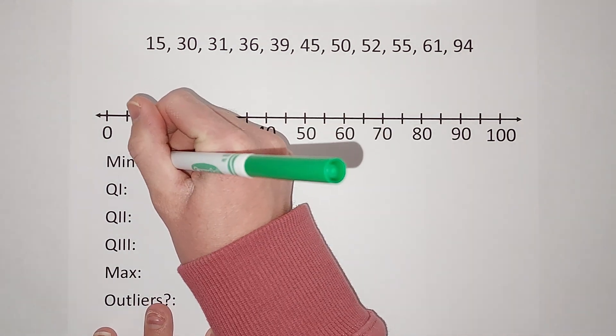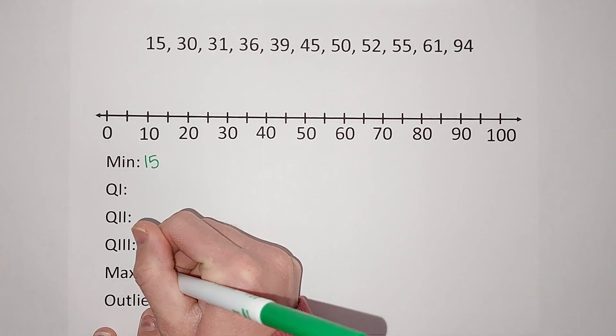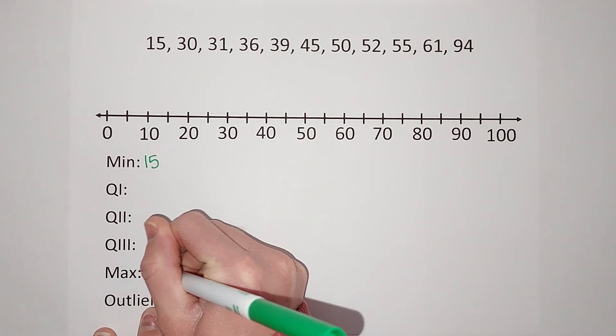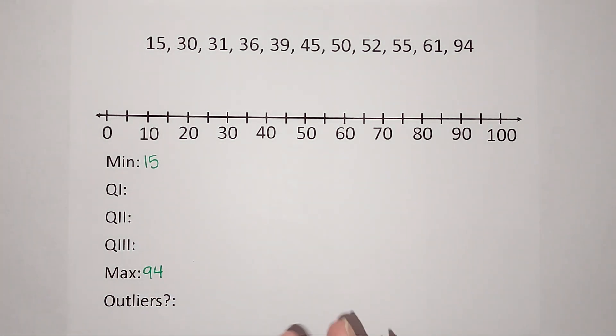Just know that because it is a modified box plot, the minimum and maximum could change. But for now, my minimum is 15 and my maximum is 94.